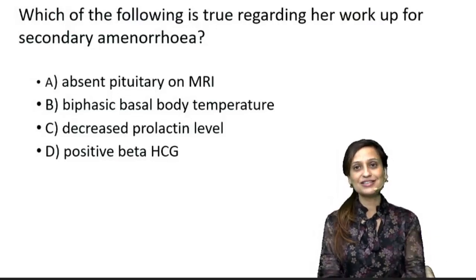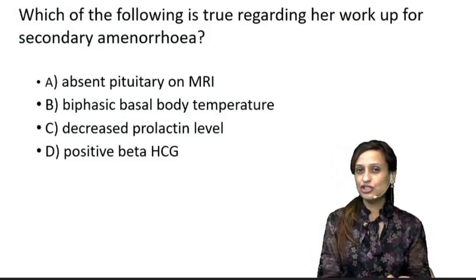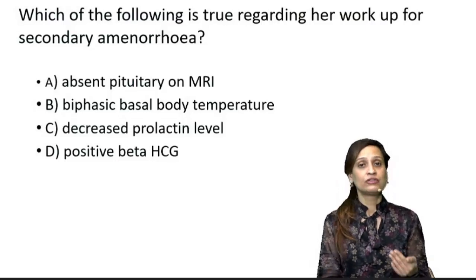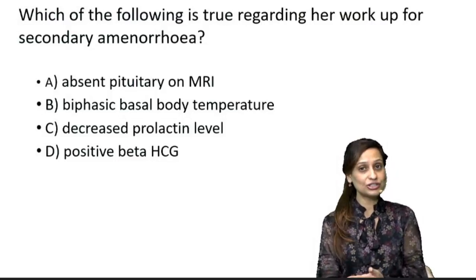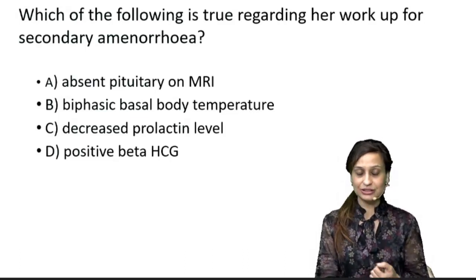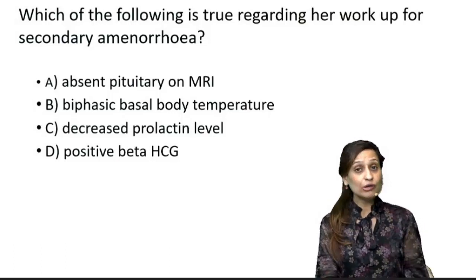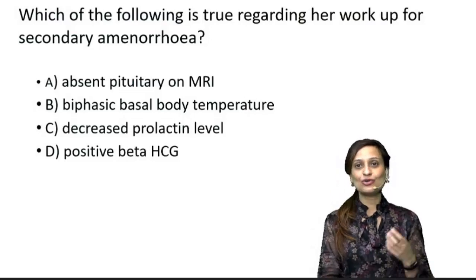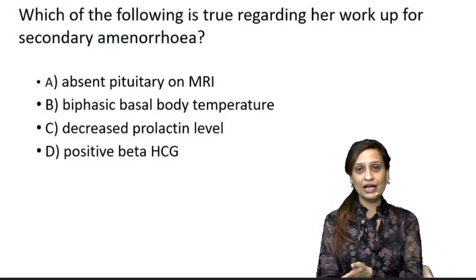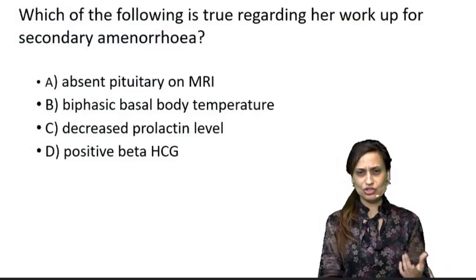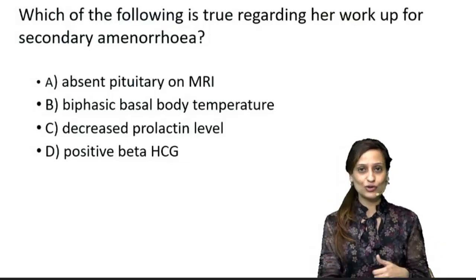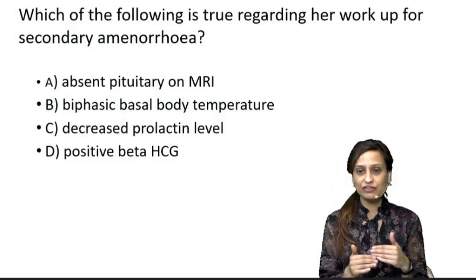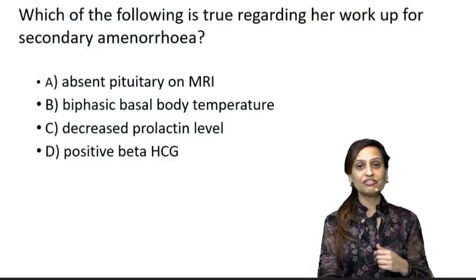Once we have a woman with secondary amenorrhea after delivery, what are the differential diagnoses? First, a fresh new pregnancy — ovulation returns soon after delivery, and this woman was not using contraception. Second, Sheehan's syndrome — when there is amenorrhea following delivery, we should think of Sheehan's. Third, Asherman's syndrome — following delivery or abortion, if the woman has amenorrhea, Asherman's should be considered. These are the three most important differentials: fresh new pregnancy, Sheehan's syndrome, and Asherman's syndrome.